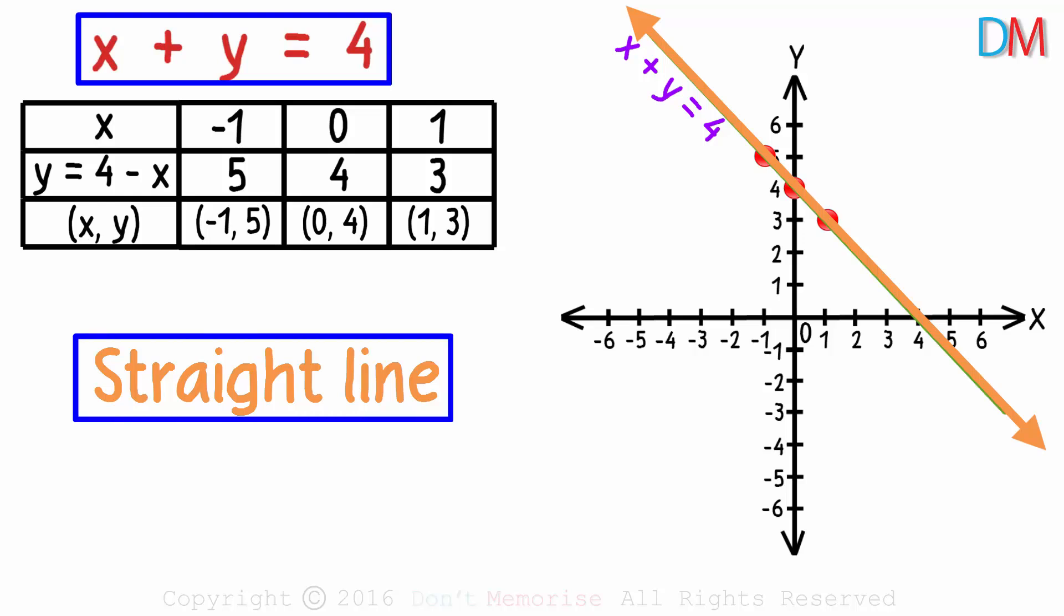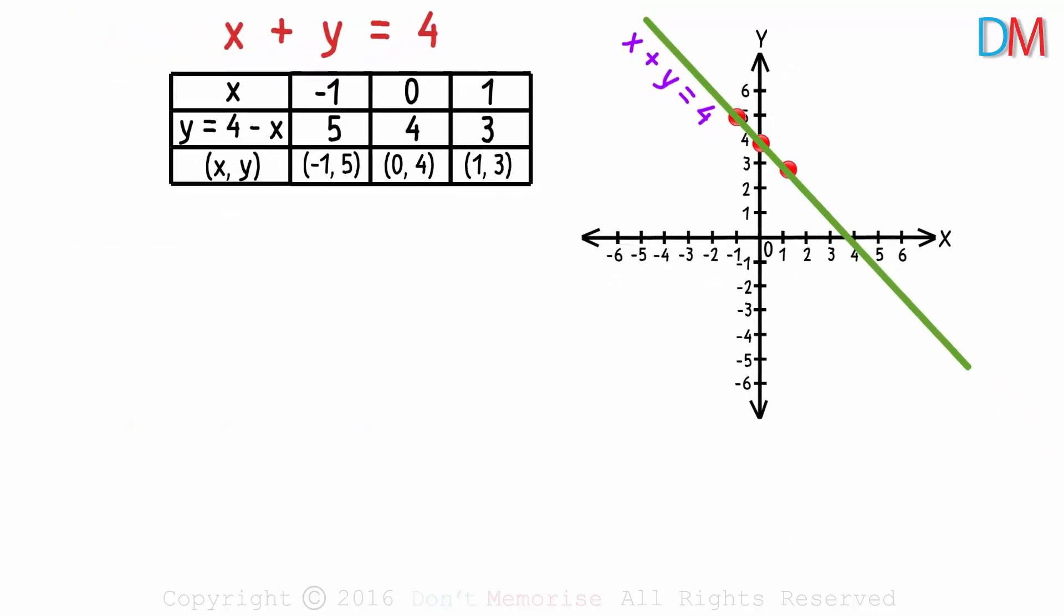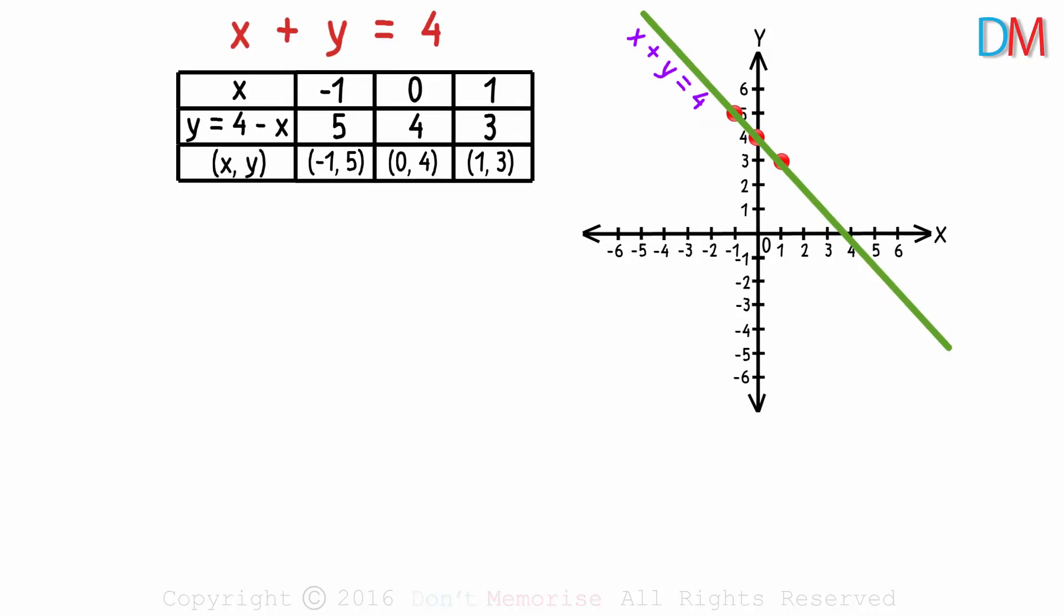What else does this graph tell us? Another important thing it tells us, is that whichever point you pick on this line, it will be a solution to this equation. Now these three points we surely know are the solutions of this linear equation.